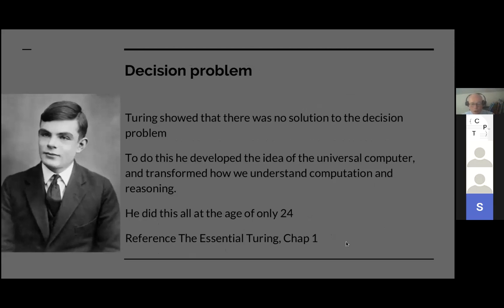So what Turing did is he showed there's no solution to Hilbert's decision problem. And to do this, he developed the idea of the universal computer. And in doing so, this conceptual innovation has totally transformed how we understand computation and reasoning in the period after that. The results were not immediate, but by the 1950s, they were very evident. And he did all this at the age of only 24. For this, you can look at the essential Turing chapter one.